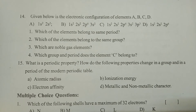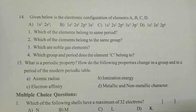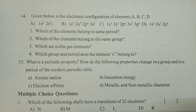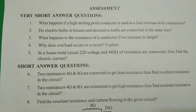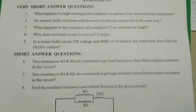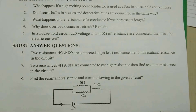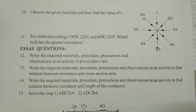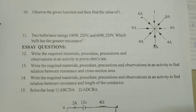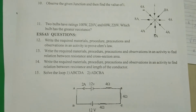An important long answer question here is: What is the periodic property, and how do the following properties change in a group and period of the modern periodic table? Coming to chapter number nine, Electric Current, there are five very short answer questions, three short answer questions — all numericals — and four long answer questions, all important.